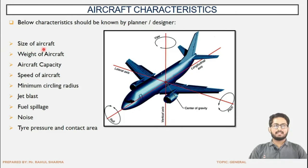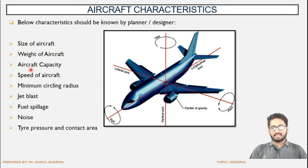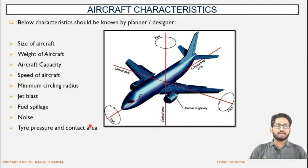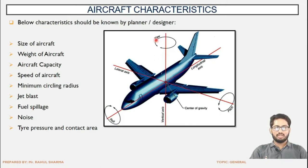The characteristics include: size of the aircraft, weight of the aircraft, capacity of the aircraft, speed of the aircraft, minimum circling radius, airspace, jet blast, cruise fuel spillage, noise, tire pressure, and gear arrangement. Also in this image, all three controls have been shown.